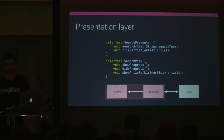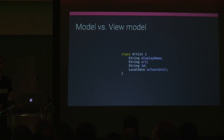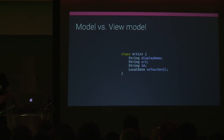The Search Presenter interface should be able to search artists and respond to clicking on an artist. The Search View interface should be able to show a progress bar, hide the progress bar, and show a given list of artists. Something we also took into account at Songkick is the problem of huge models — your API gives you all these attributes you don't really need for your use cases, and you end up carrying huge models around and doing complex logic every time you bind data.